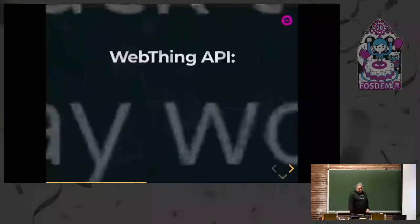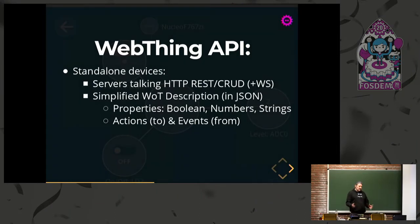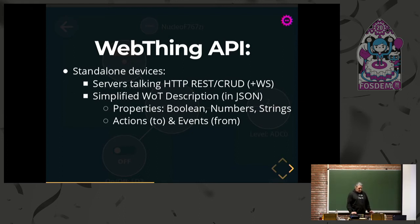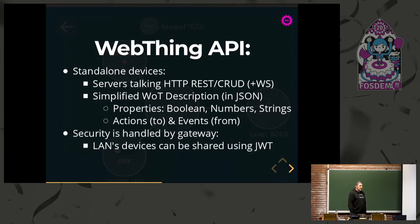WebThing devices connect to the gateway using a basic HTTP REST protocol, and they describe all their resources using a Mozilla schema — a simplified version of what the W3C specifies. It's a set of properties describing the thing: an on/off button, a level if you want to adjust brightness, an action to give instructions like 'fade brightness slowly then turn off,' and events to receive from the device. If you want to implement simple things, you can just focus on properties.